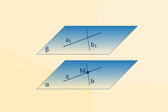As the line B is parallel to the line B1, the line B is parallel to the plane beta.